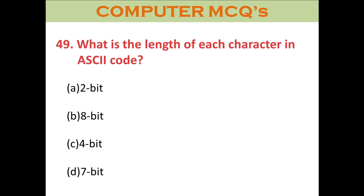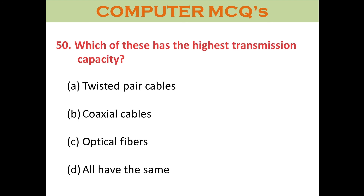Question forty-nine: What is the length of each character in ASCII code? A. 2-bit. B. 8-bit. C. 4-bit. D. 7-bit. The right answer is D: 7-bit.